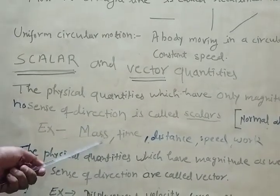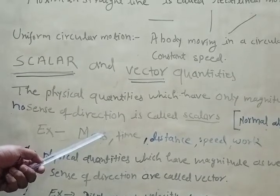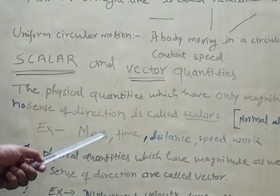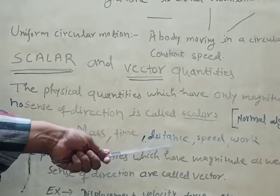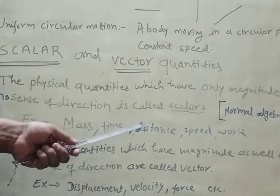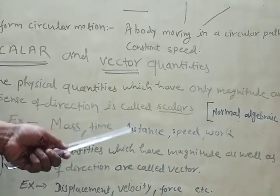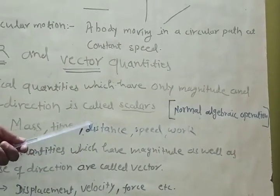For example: mass, mass in kilogram or gram. Time measured in seconds. Distance measured in meters. Magnitude like 10 meter, 100 meter. Speed 40 km per hour.